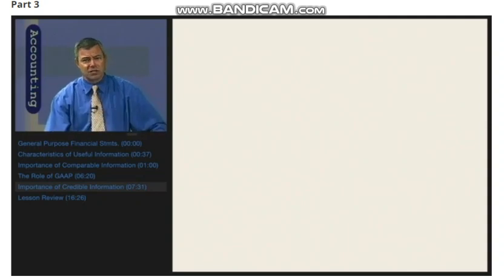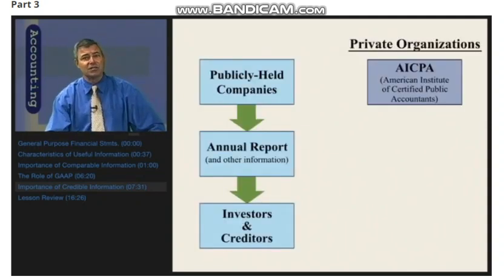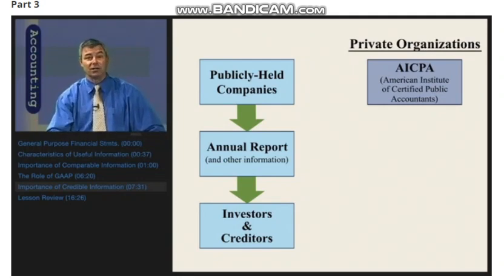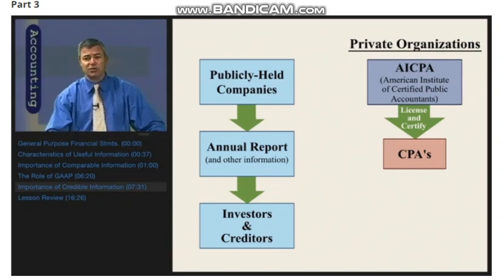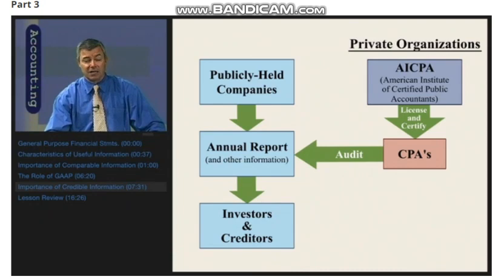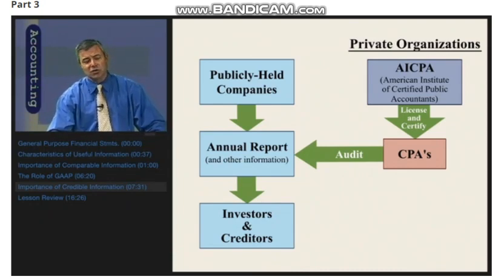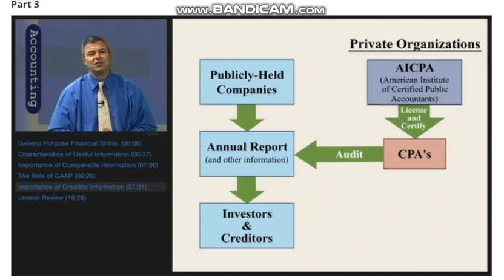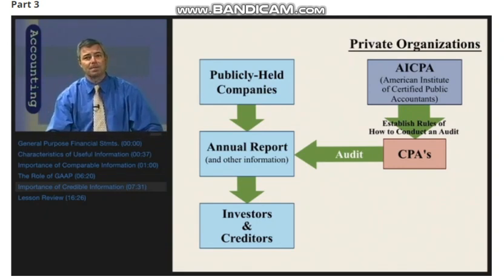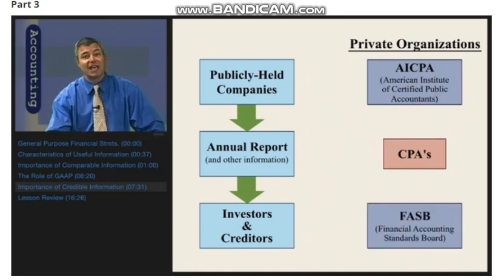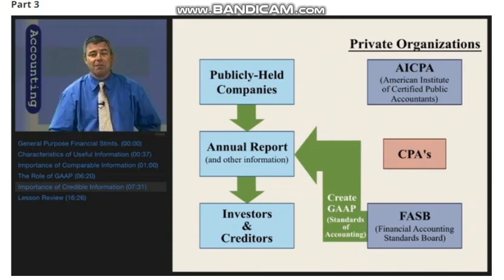What we're focusing on is the stock and bond transactions between investors and creditors — the raising of capital for business. There are also some private organizations that have influence in this process. One is the AICPA, the American Institute of Certified Public Accountants. They were originally assigned the responsibility of determining generally accepted accounting principles, but they no longer have that responsibility. However, the AICPA is still involved indirectly because they are involved in the licensing and certification of CPAs. CPAs are certified state by state by a state board that requires a certain amount of college education, passing an exam, and some apprenticeship or practical experience. The AICPA conducts and administers the CPA exam used by all states to evaluate competency, establishes the rules of how to conduct an audit, and monitors the professional conduct of CPAs. The other private organization with significant influence is the FASB, whose responsibility is the creation of generally accepted accounting principles — they come under the influence of the SEC, but they are the ones charged with determining GAAP.